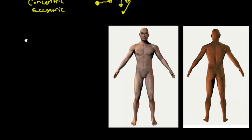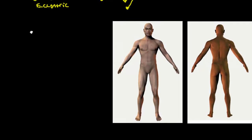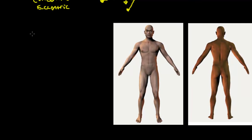It's important to understand concentric contraction because it lets us know which muscle groups are being worked during a lift. Most exercises and machines, when they refer to working particular muscle groups, they're talking about the concentric contraction of those muscle groups in order to lift the weight.